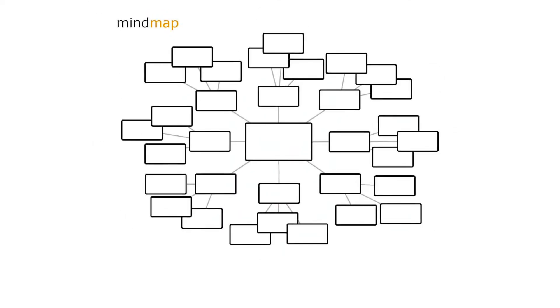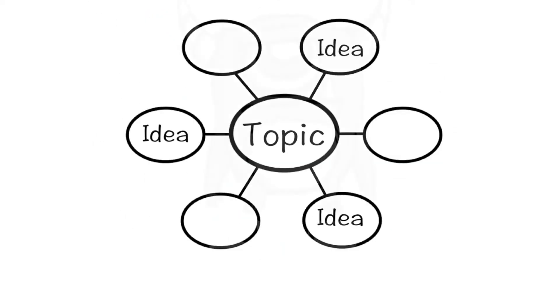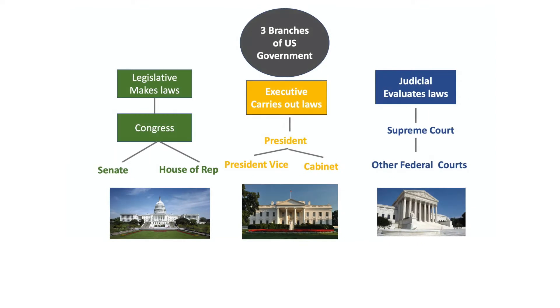Graphic organizers, sometimes called concept or mind maps, help students break topics and processes down into manageable chunks and are useful for brainstorming and developing ideas. Organizers and mind maps can provide prompts and placeholders that support student learning, while the use of color coding and images can support memory and retrieval.